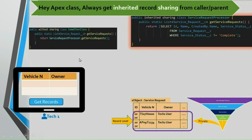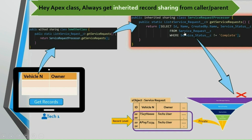In this combination, the caller has without sharing. When tech1 user clicks on get records, the caller is without sharing. Since our actual class uses inherited sharing, it inherits the mode from the caller. The caller's mode is without sharing, which is system mode. Hence our SOQL runs without applying sharing techniques for this user, and two records are returned to the query, handed over to the caller, and displayed in the UI.